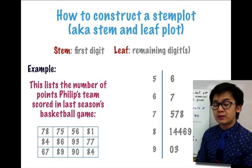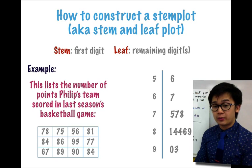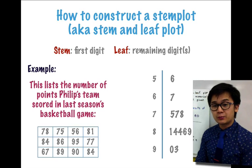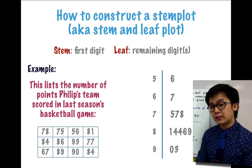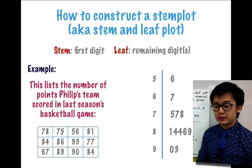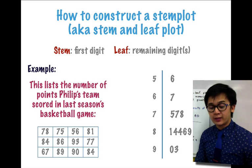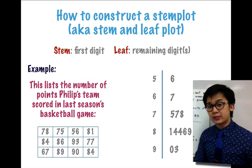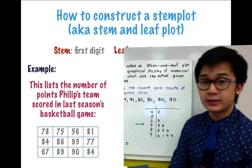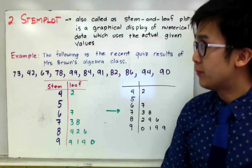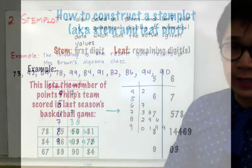And you will see that the distribution or the behavior of this particular numerical value shows a skewed distribution, which basically tells us that Philip's team did a pretty good job in this particular season based on their scores. And that is how we construct a stem plot or stem leaf plot using univariate data set.